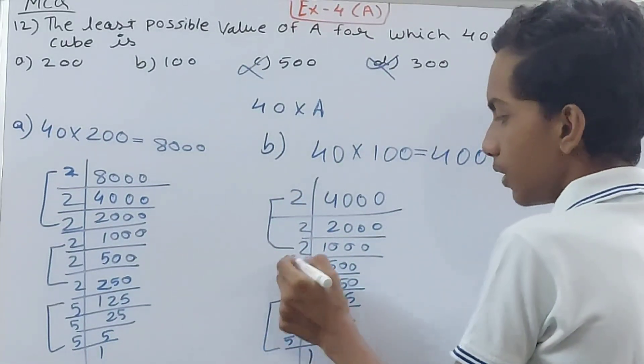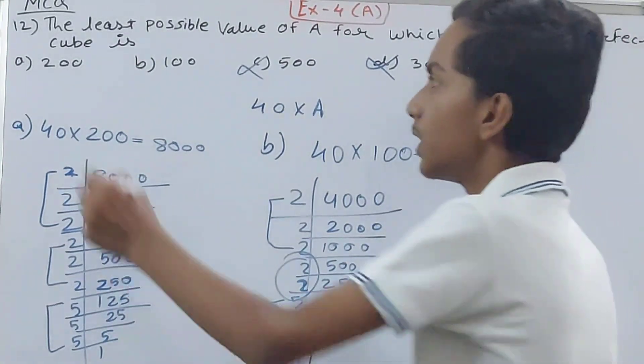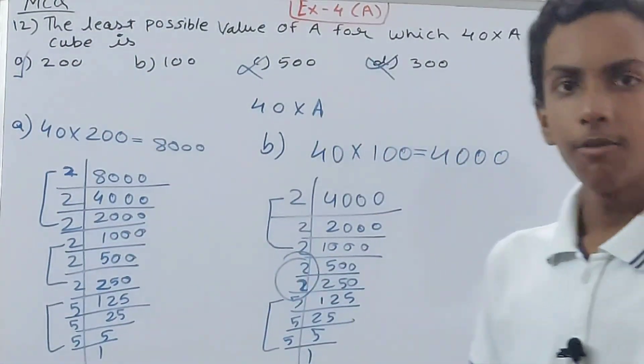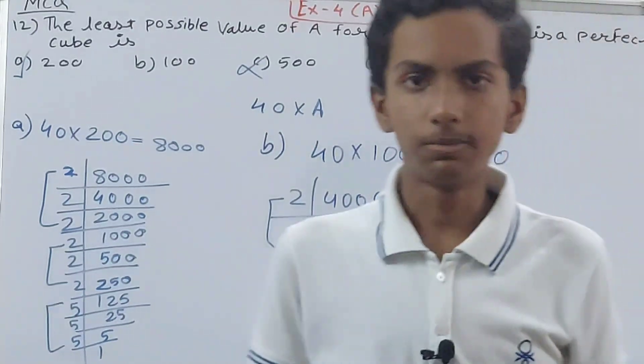That means this is not a perfect cube. Therefore option A is correct because it is the smallest number also, and when multiplied by 40 it is also giving us the perfect cube.